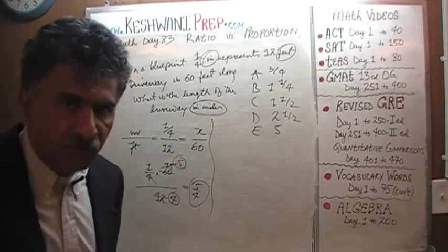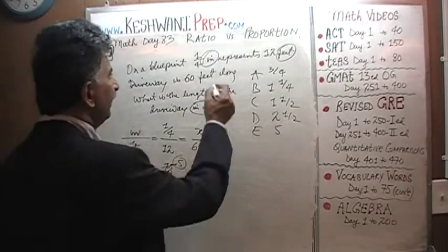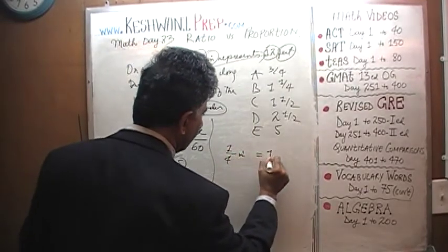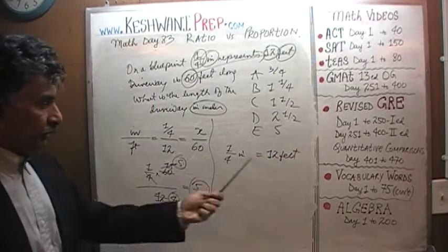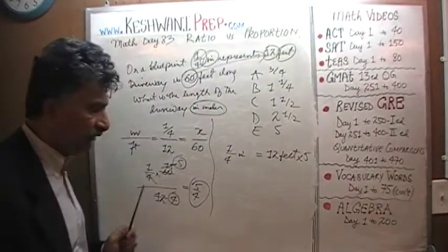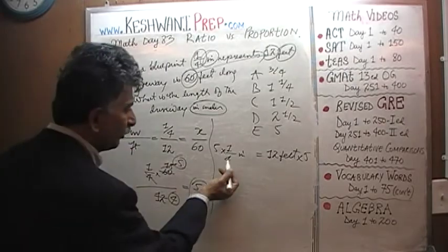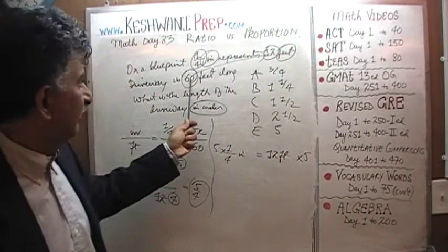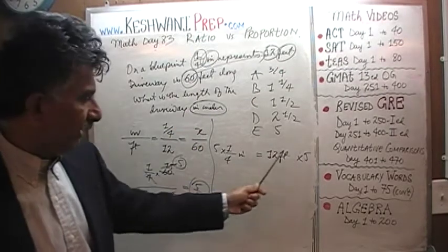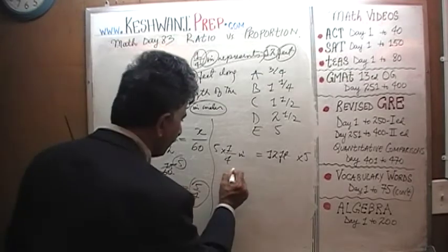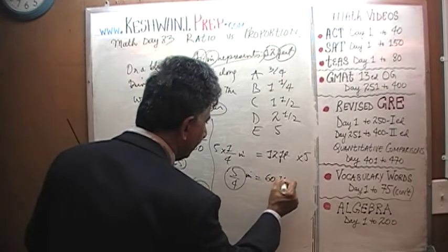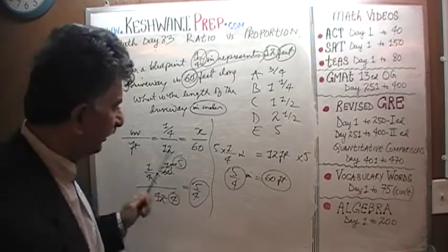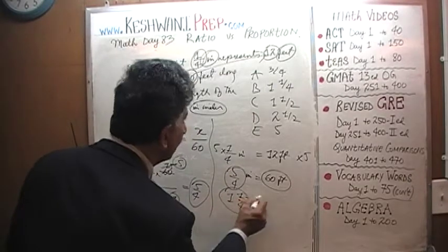A straightforward way will only take 2 seconds: one quarter inch is 12 feet, and the driveway is 60 feet. Realize that 60 is just 5 times 12, so multiply the inches side by 5 as well — that's 5 times one quarter, which is 5 fourths. 5 fourths of an inch represents 60 feet of driveway on the blueprint. We convert this improper fraction: 5 fourths is the same as one and one quarter. The answer is B — one and one quarter.